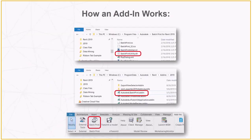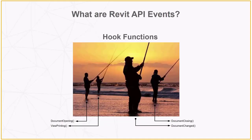Here's basically how an add-in works. Like the batch print tool you can download and install from Autodesk — it's really only two files: a DLL that contains all the code, and an add-in manifest file that loads the tool into Revit.